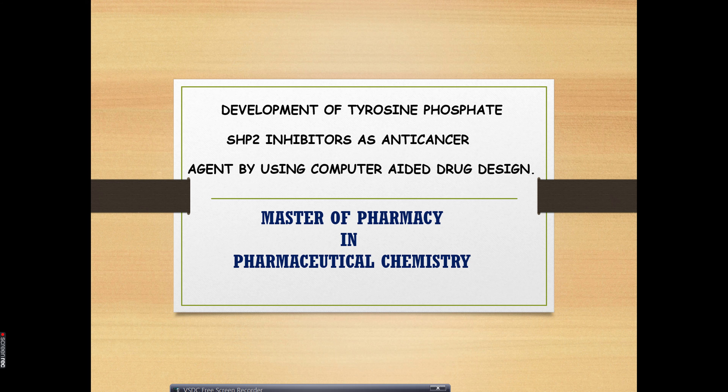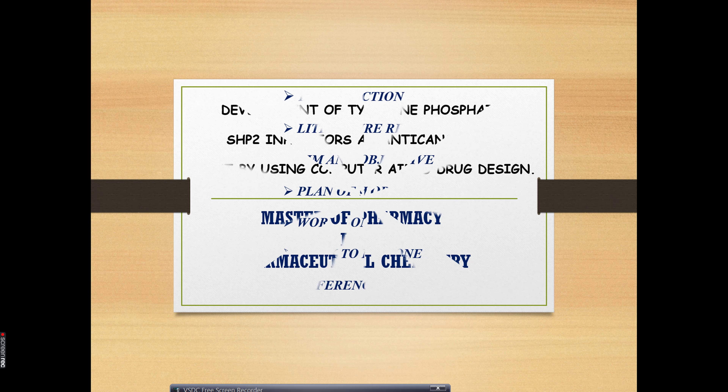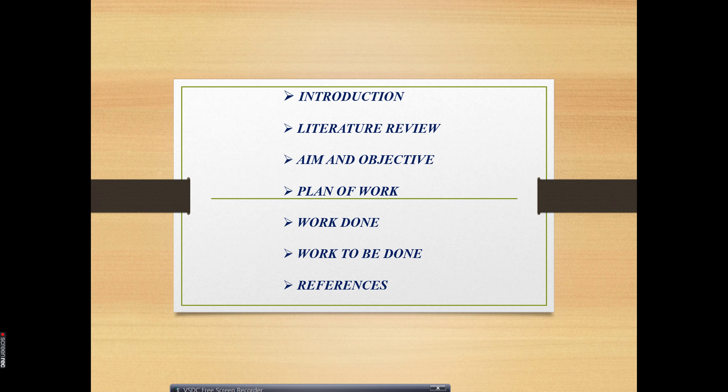So the main sections are: introduction, literature review, aim and objectives, work to be done, work done, and references. These are the main points that you have to cover in each and every synopsis, thesis, plan of work, research article, or any academic writing.